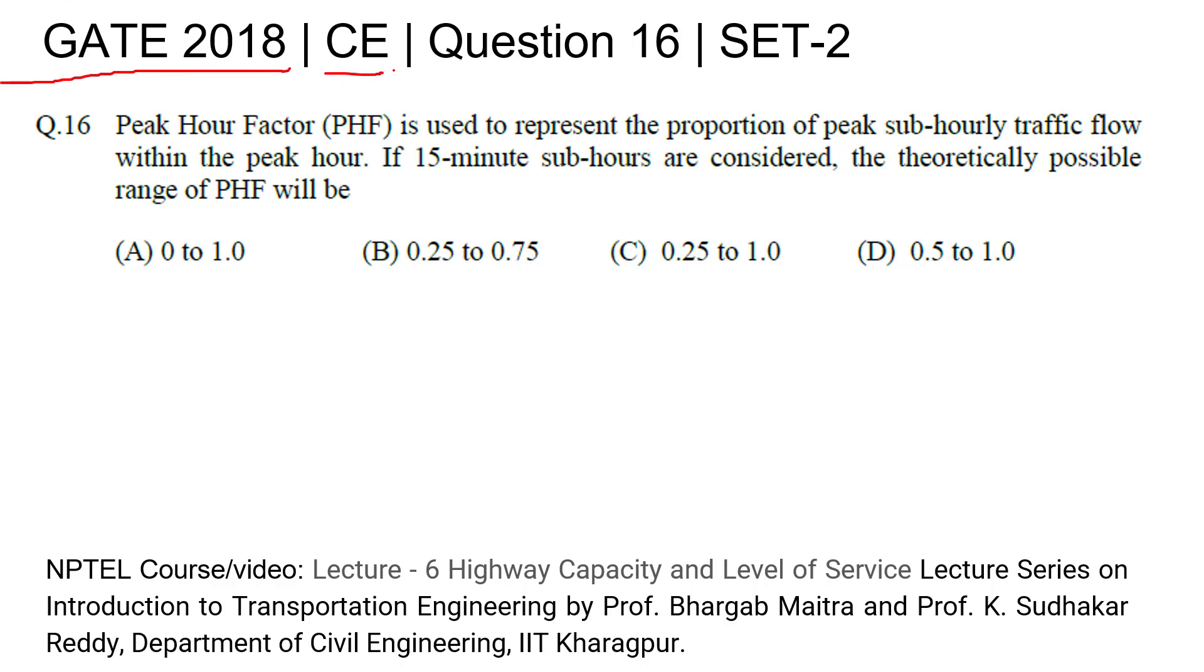GATE 2018 civil engineering question number 16, set 2: Peak hour factor is used to represent the proportion of peak sub-hourly traffic flow within the peak hour. If 15-minute sub-hours are considered, the theoretically possible range of peak hour factor will be - they have given four options, we have to select one for this question.